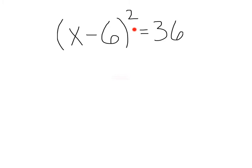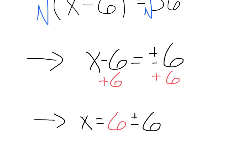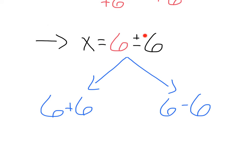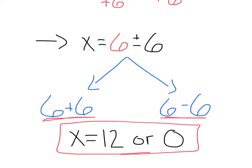Alright — x minus 6, the whole thing squared, equals 36. This time our squared term is x minus 6, so we're not going to add 6 to start. We're actually going to take the square root of both sides, because this whole x minus 6 in parentheses is being squared. That gives us x minus 6 equals plus or minus the square root of 36, which is 6. Now we add 6 to each side, giving us x equals 6 plus or minus 6. That means x equals 12 from 6 plus 6, or 0 from 6 minus 6.